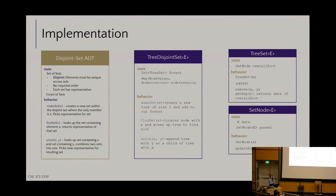The TreeDisjointSet also has a field that maps every individual node's value to the specific reference for where you can jump in to get that node — so you don't have to search through trees to find every node. The TreeSet in its forest field has a collection of TreeSets. TreeSets store an overall root and you can add, get the representative, etc. The TreeSets are made up of SetNodes, which have a data field and a parent field. If the parent field is null, that node is the root of its particular TreeSet.